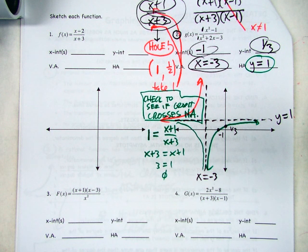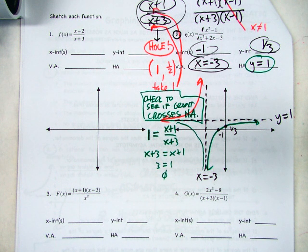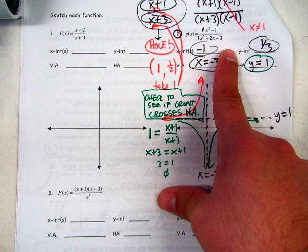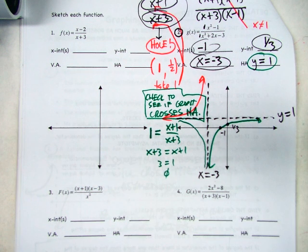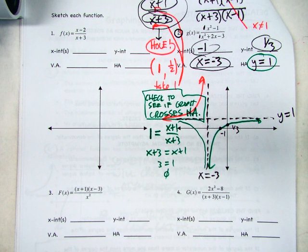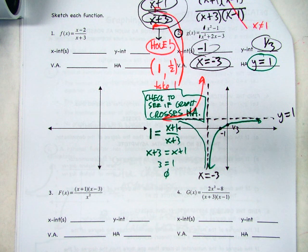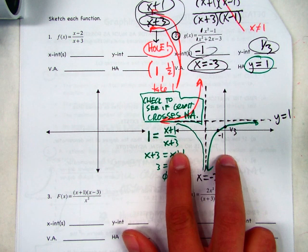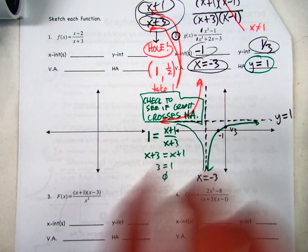Student: Is it possible to get multiple x-intercepts so you'd have to graph it differently? Teacher: Yes, it is possible to have more x-intercepts and that scenario is possible. You would never have more than one y-intercept because then it wouldn't be a function. With one vertical asymptote, you're either going to have two things up here, two things down here, or a crossover shape — it just depends on what details you have.